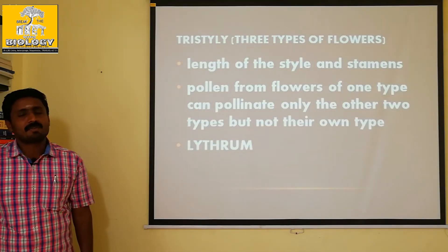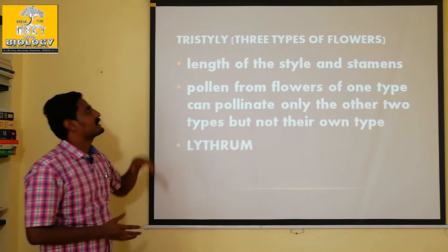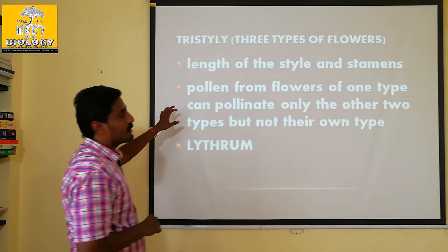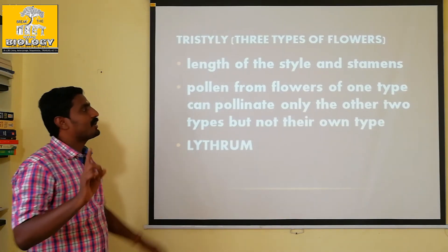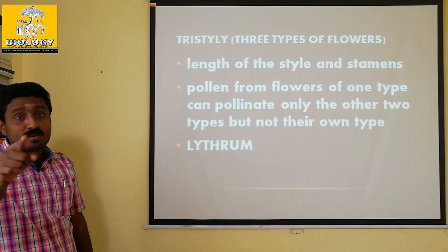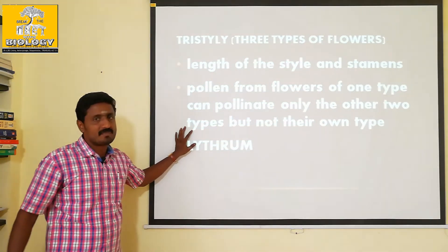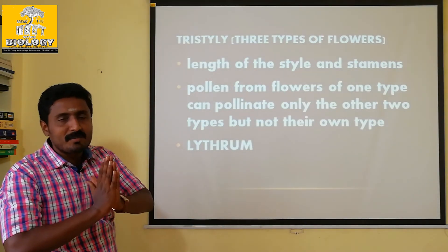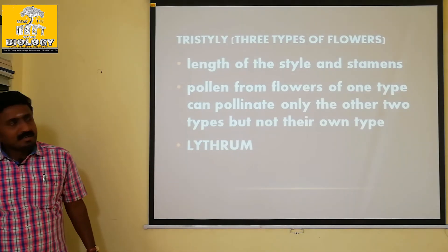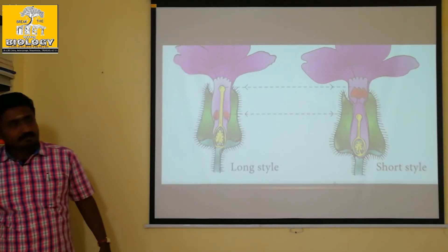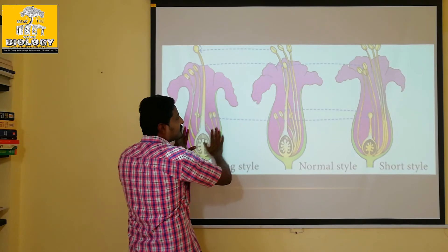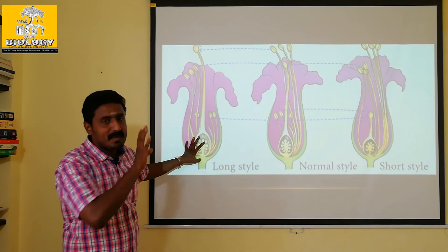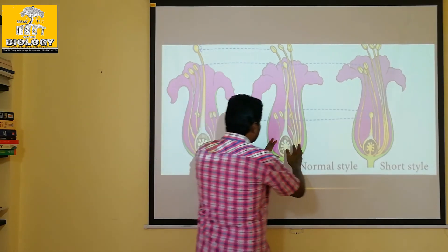Based on the definition of length of the style and the stamen, three types of flowers are produced. Pollen from flowers of one type can pollinate only the other two types, but not their own type. In this plant, self-pollination can also pollinate only the two other plants.